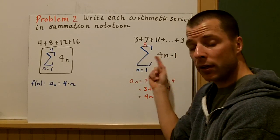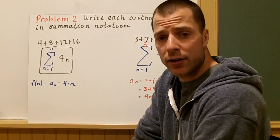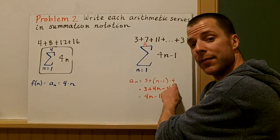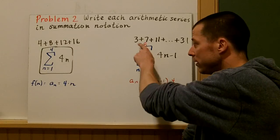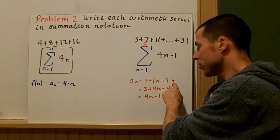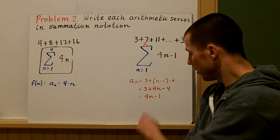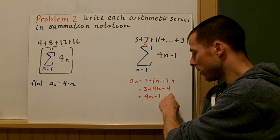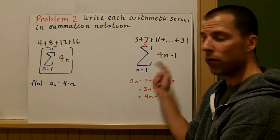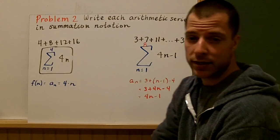To get the rule, I decided to use my explicit formula for an arithmetic sequence: a_n = a_1 + (n-1)d. Well, a_1 is 3, 3 plus the quantity n minus 1 times your common difference, which is 4. I can go ahead and distribute the 4, which I get 3 plus 4n minus 4 and combine like terms. So my rule, my explicit formula is 4n minus 1. That's the summation notation for this arithmetic series.